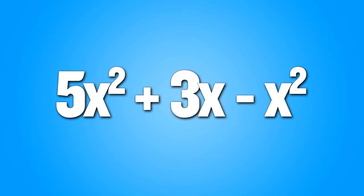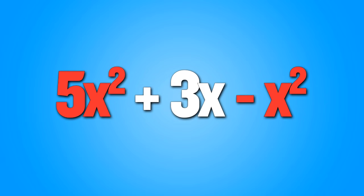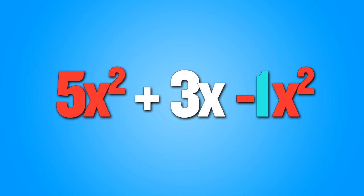One last example: 5x squared plus 3x minus x squared. This one's a little tricky because right off the bat it looks like they're all teammates since they all have the same letter. But there's one other thing from the intro — in order to be like terms, they not only have to have the same letter, but also the same exponent. The only two terms with the same letter and exponent are 5x squared and minus x squared. Those are our only teammates. 5x squared minus x squared looks tricky, but whenever there's just a minus x squared, we can put a 1 in front because it's the invisible number. 5x squared minus 1x squared is 4x squared.